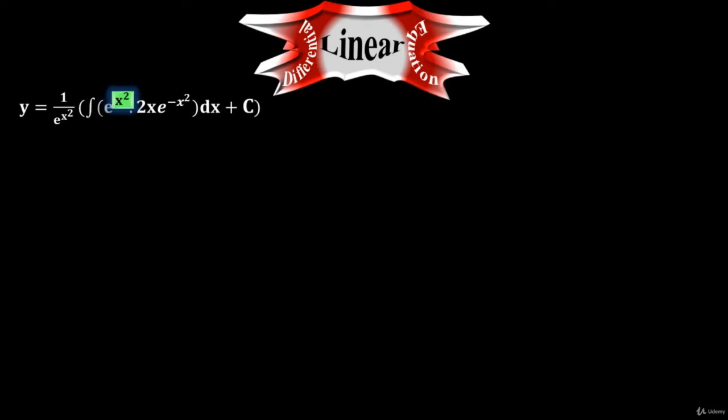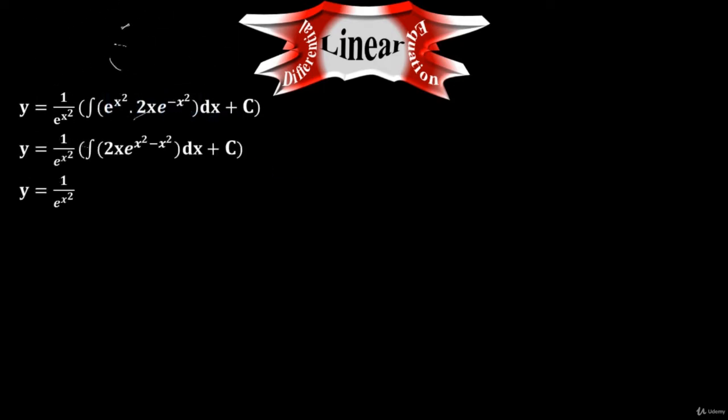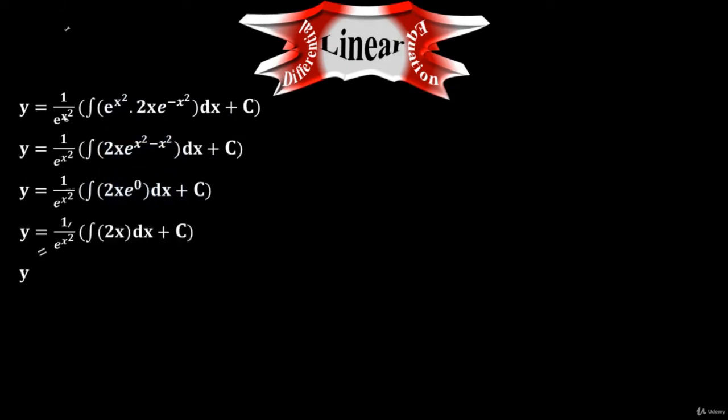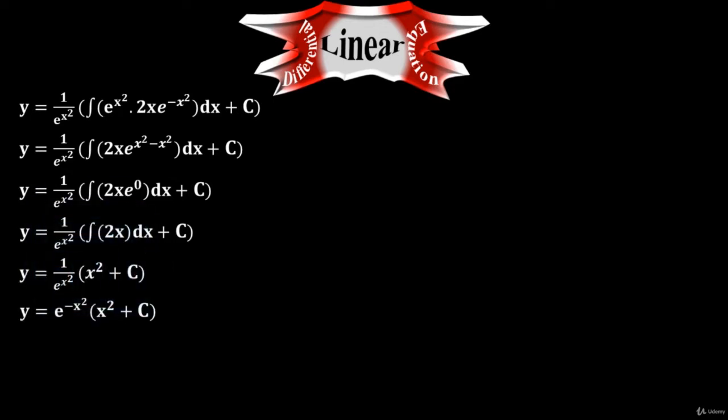Can we add the powers of x squared and minus x squared? Yes, because they both have base e — they have the same base, so we can add the exponents. After integration, I have y equals to 1 over e to the x squared times x squared plus c, because the integral of 2x is x squared. We then pull e to the x squared up to the numerator to get e to the minus x squared.